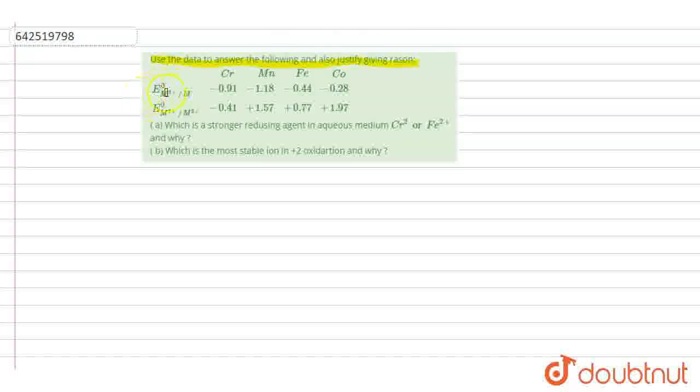Here we have data for the E° values. The E° value of M²⁺/M and M³⁺/M²⁺. For chromium, the values are minus 0.91 and minus 0.41. Similarly, in case of manganese, it's minus 1.18, and for the M³⁺ to M²⁺ condition, it's plus 1.57.